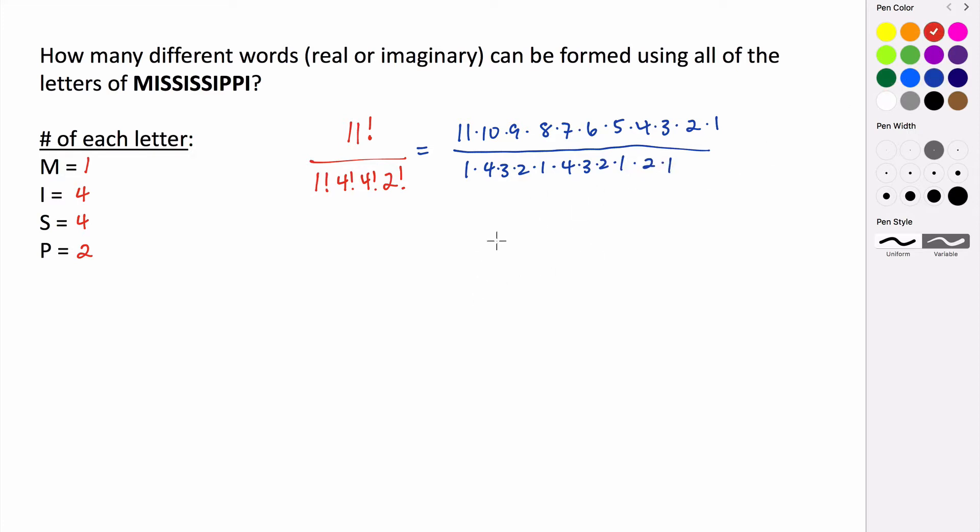All right, so these 4, 3, 2, 1 can cancel with these 4, 3, 2, 1 here. We know that 4 times 2 is 8, so that can cancel with that. 3 times 2 is 6, that can cancel with that. Everything else that we're left with in the denominator is a 1.